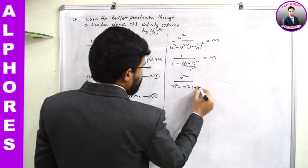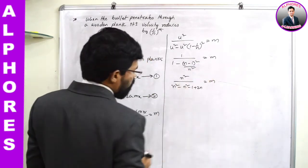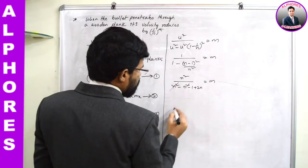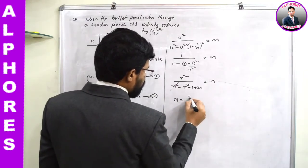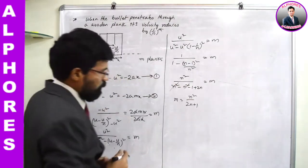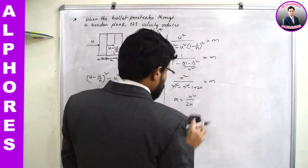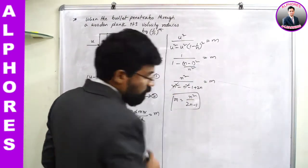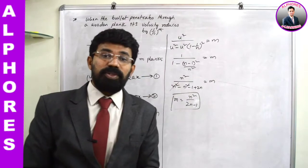Expanding (n-1)²: n² minus (n² - 2n + 1), so the denominator becomes 2n - 1. After cancellation, the number of planks required is m = n² / (2n - 1).